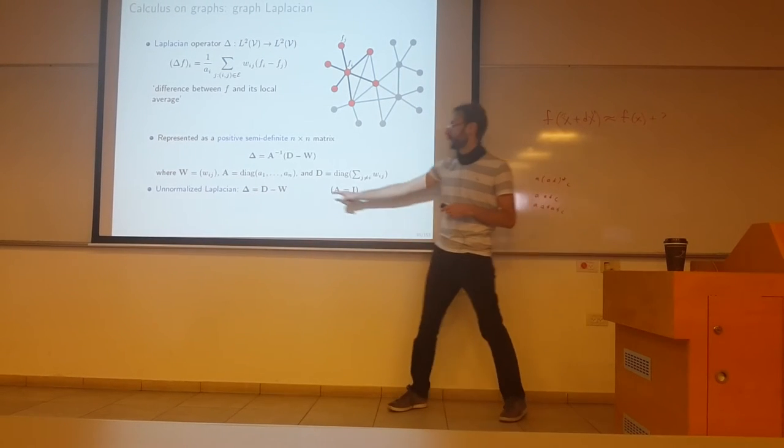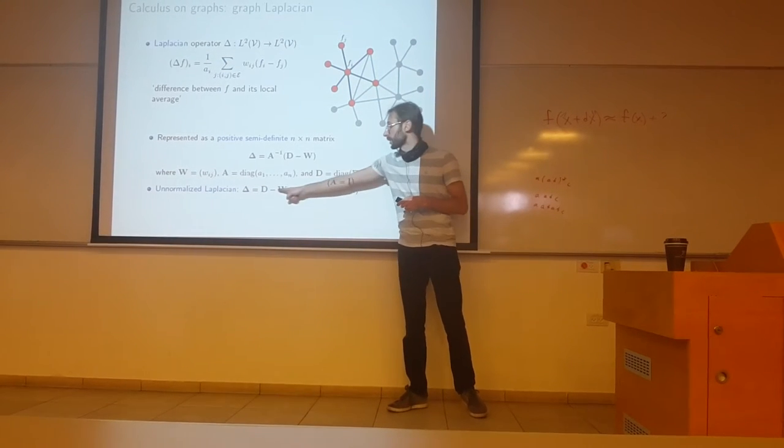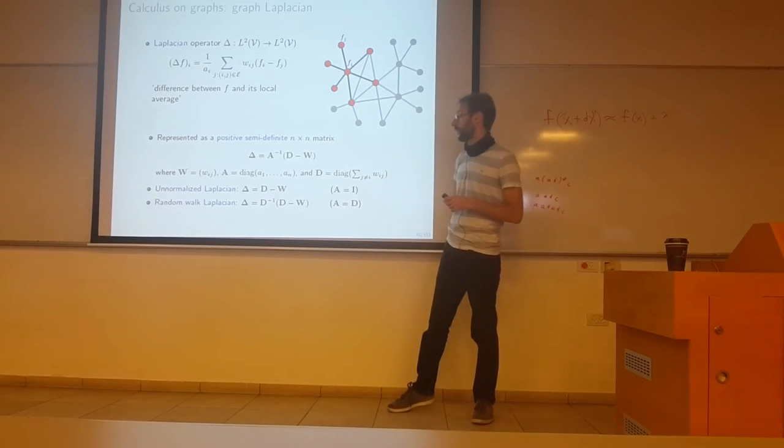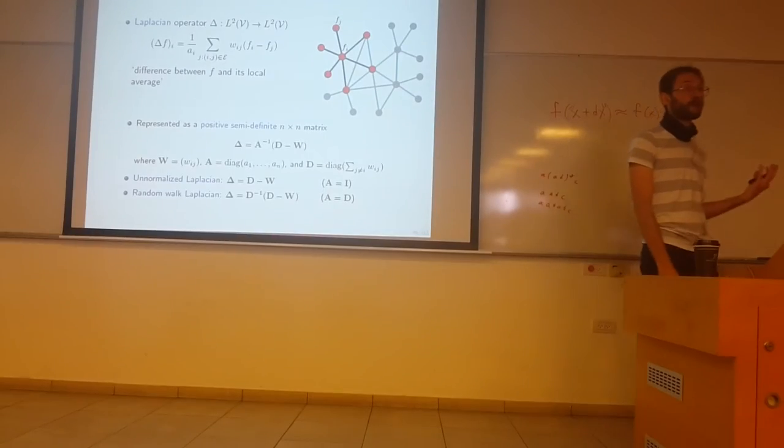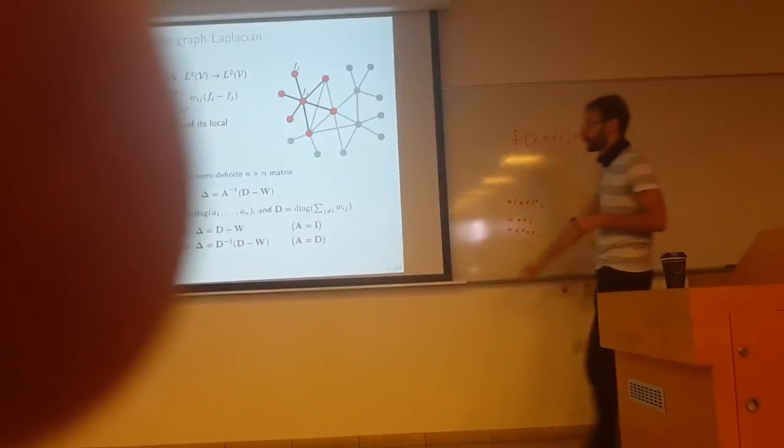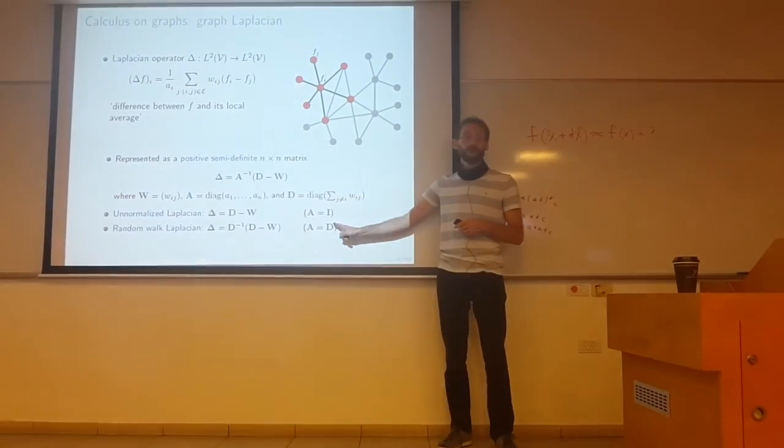A equal to i, then you have to just call the unnormalized Laplacian, just d minus w. The random walk Laplacian that is related to transition probability of random walk on the graph is just choosing A to be the degree matrix.